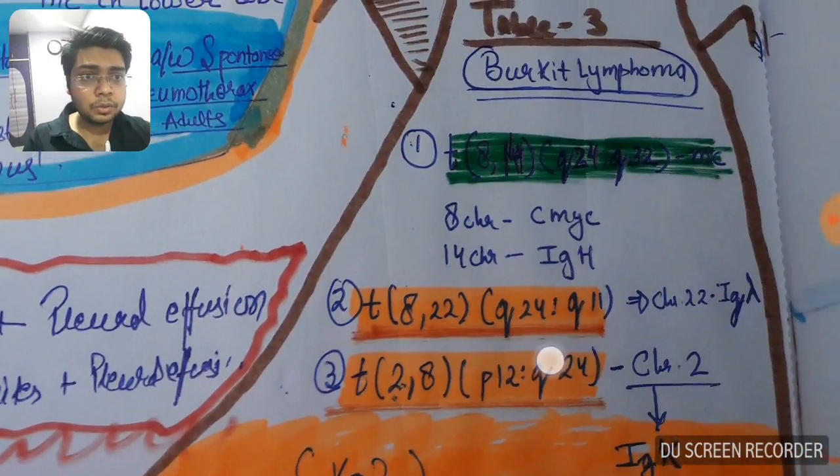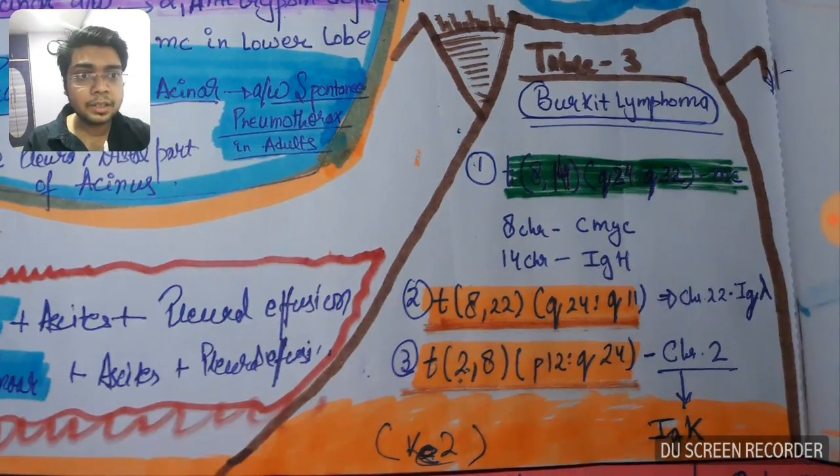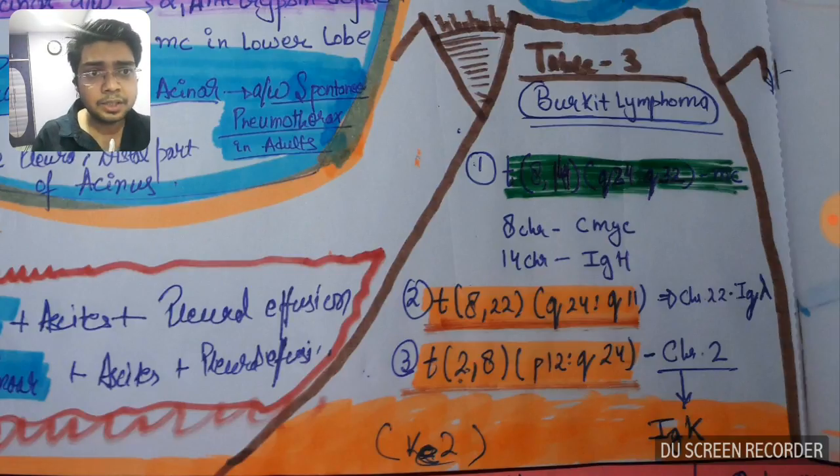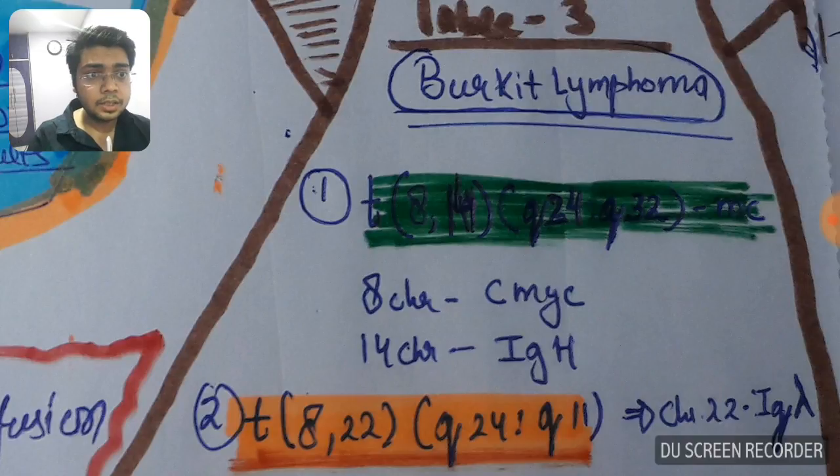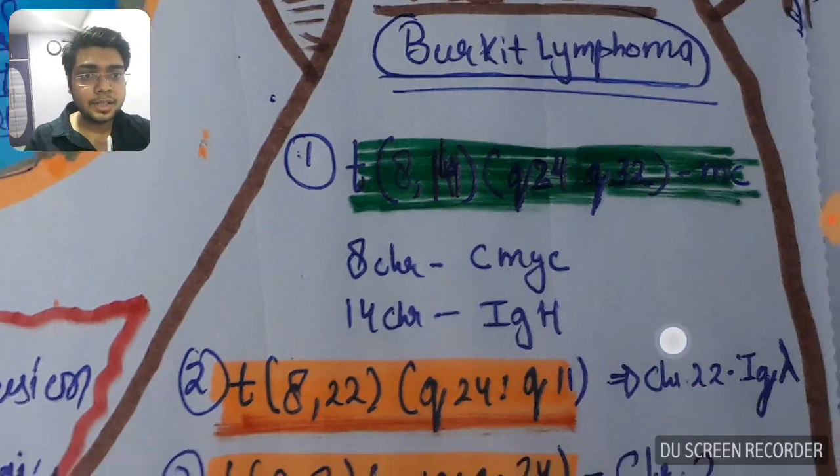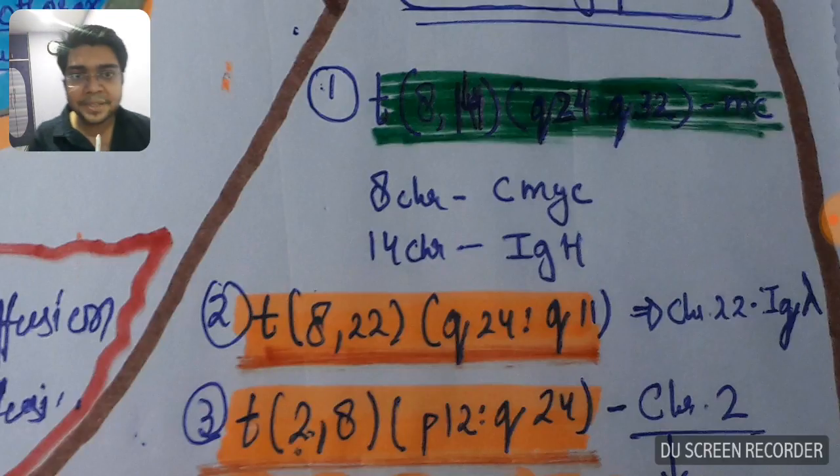Burkitt lymphoma: three types of mutation or translocations you can see in Burkitt lymphoma. The type 1, that is the most commonly seen, is translocation t(8;14) q24 q32. You see the 8 chromosome in common in all the three types, so 8 chromosome is the C-MYC gene.